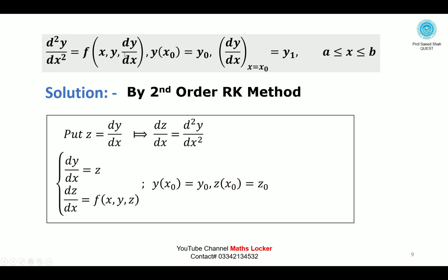This gives dz/dx = f(x, y, z). Initial conditions: y(x₀) = y₀, and dy/dx means z, so z(x₀) = y₁ — we can say z₀ = y₁.